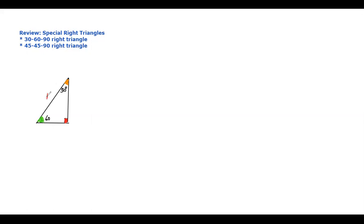If the hypotenuse is one, then the ratio for the 30 degrees side will be one-half of the hypotenuse. And the side facing the 60 degrees angle will be square root of three over two. So the 30-60-90 ratio is: one-half to square root of three over two to one.